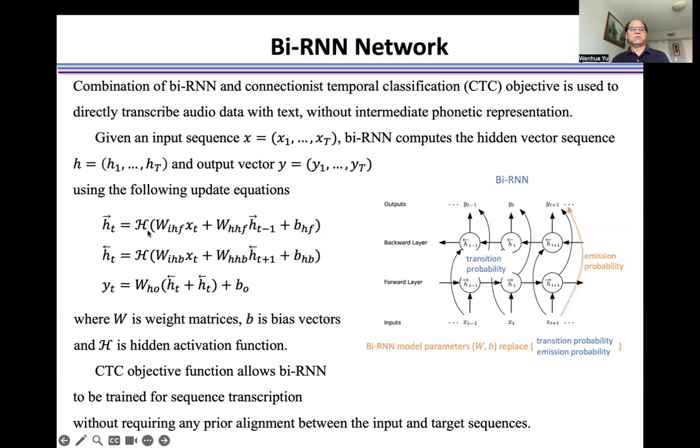This is for forward update, this for backward update, and this for output update. Where W is weight matrices, B is bias vectors, and H is a hidden activation function. Here we use bidirectional RNN to model the CTC model parameters, transition probability, and emission probability.